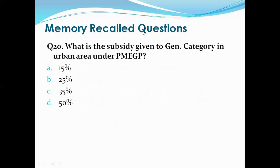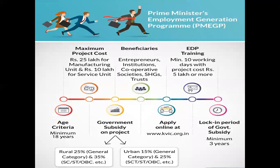Question 20 (last question): What is the subsidy given to the general category in an urban area under PMEGP (Prime Minister Employment Generation Program)? Options are: 15 percent, 25 percent, 35 percent, 50 percent. The right answer is A, that is 15 percent. The maximum project cost under PMEGP is 25 lakh rupees for a manufacturing unit and 10 lakh for a service unit. Beneficiaries can be entrepreneurs, institutions, cooperative societies, self-help groups, and trusts.